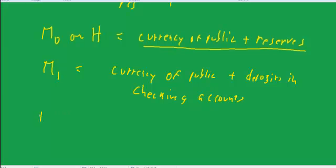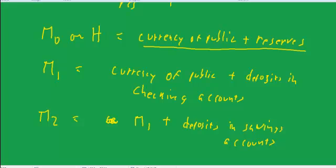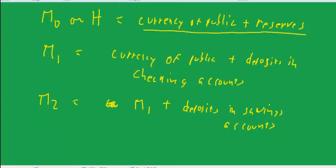The M1 money supply is equal to currency held by the public plus deposits in checking accounts. And then, the M2 money supply is M1, that is, everything that's in M1, plus deposits in savings accounts. And the idea of counting that is that people can pretty easily move money from savings accounts into checking accounts.